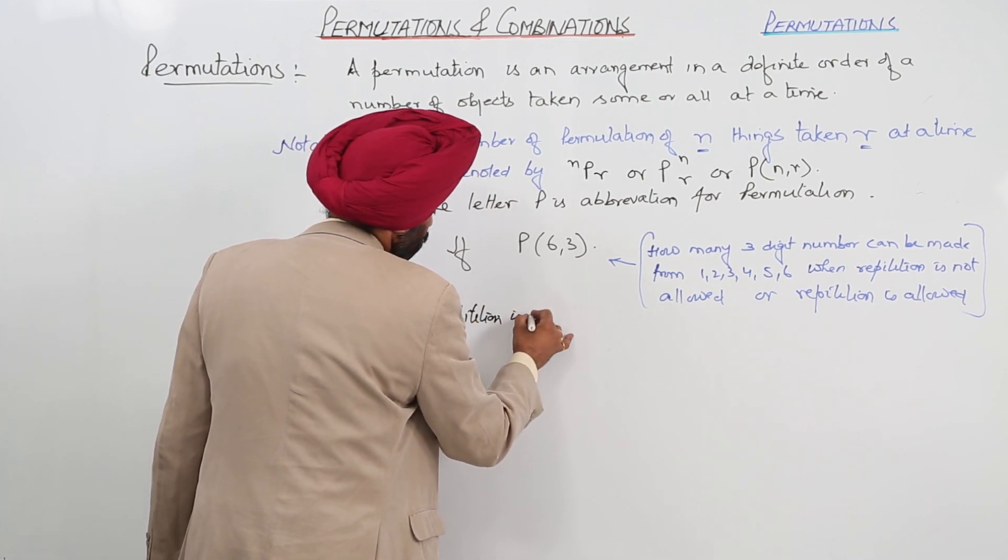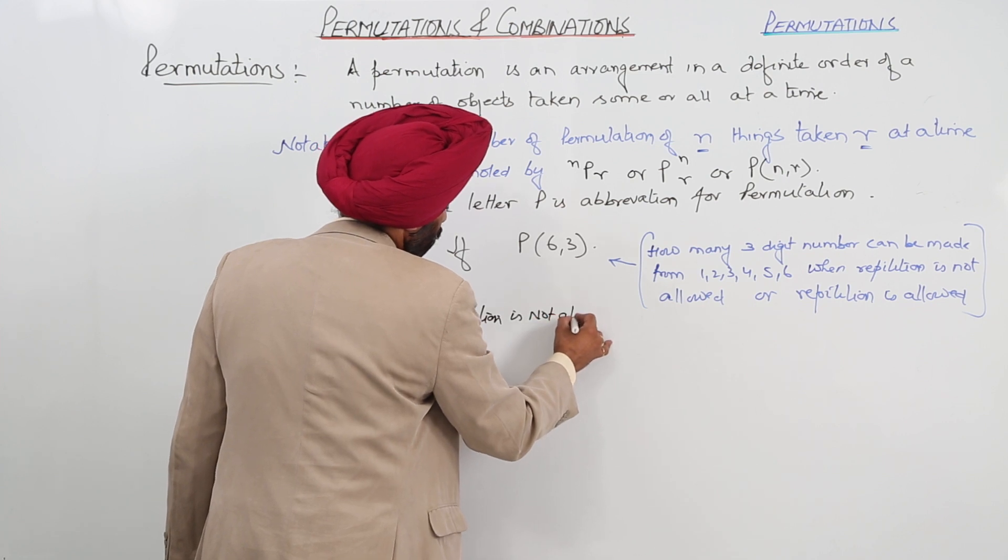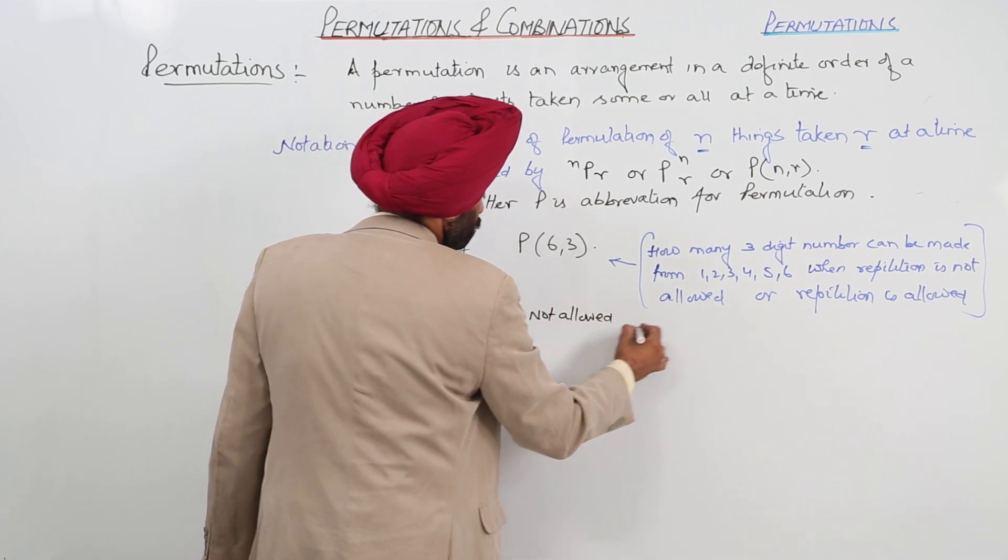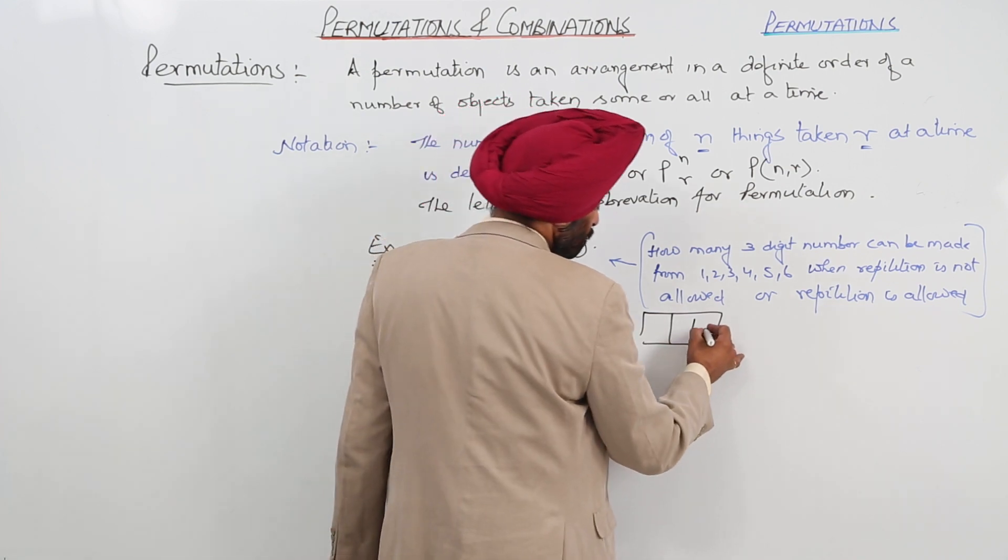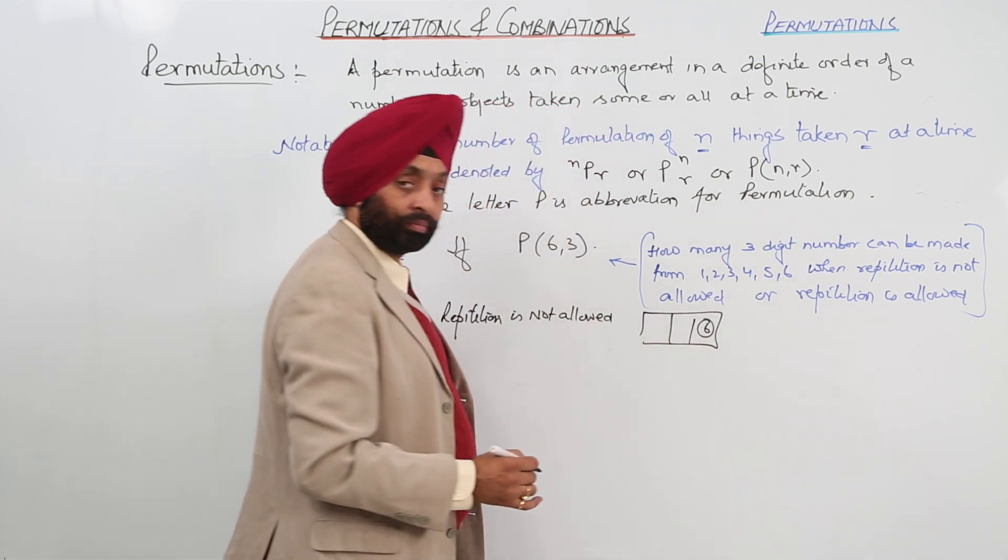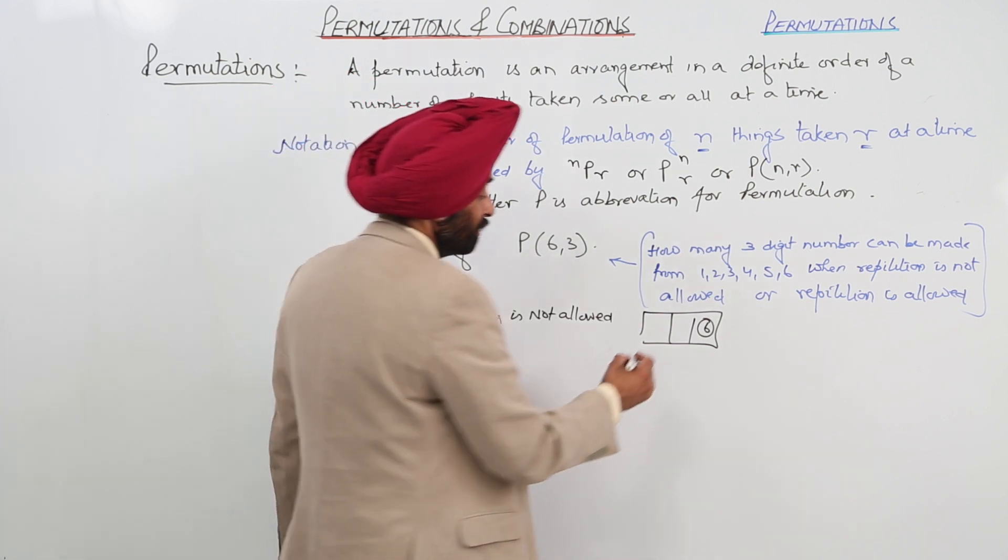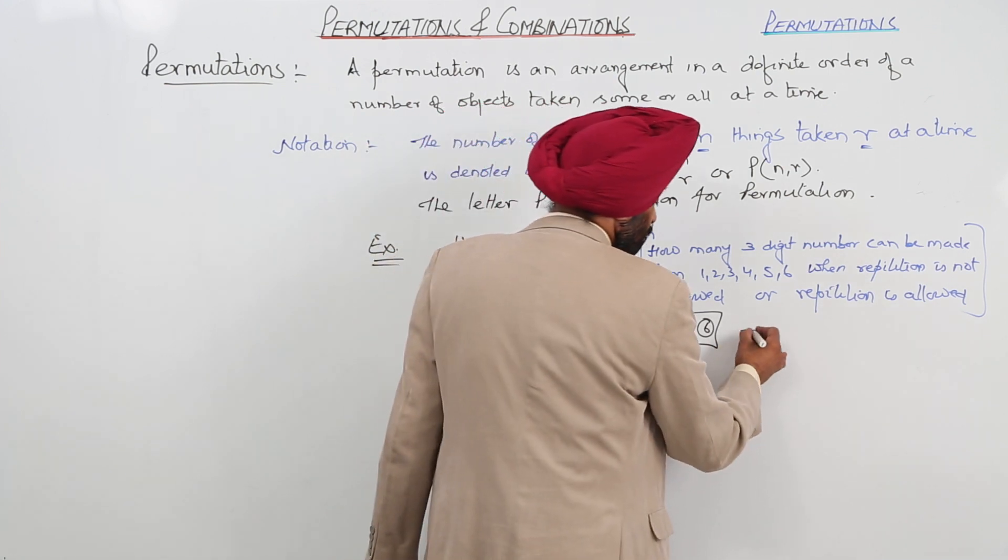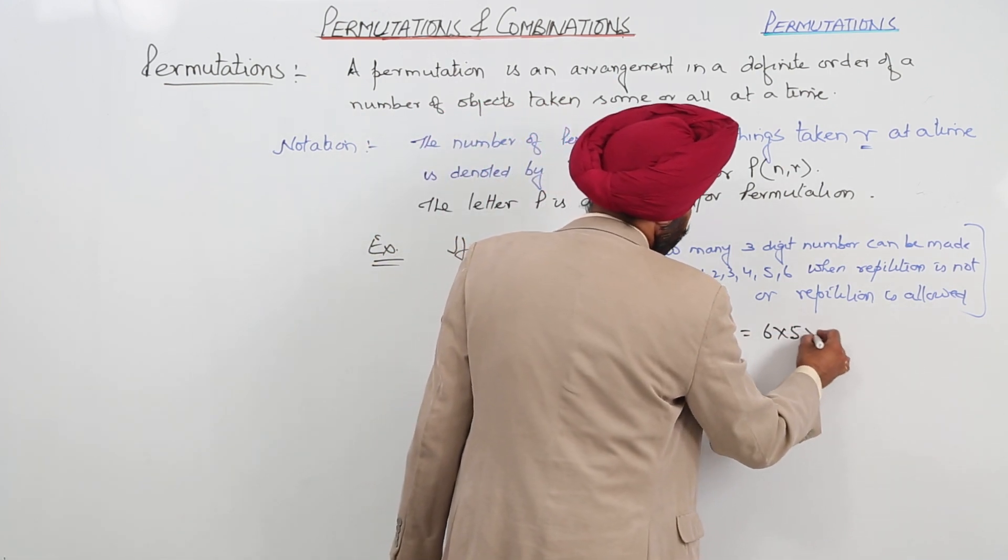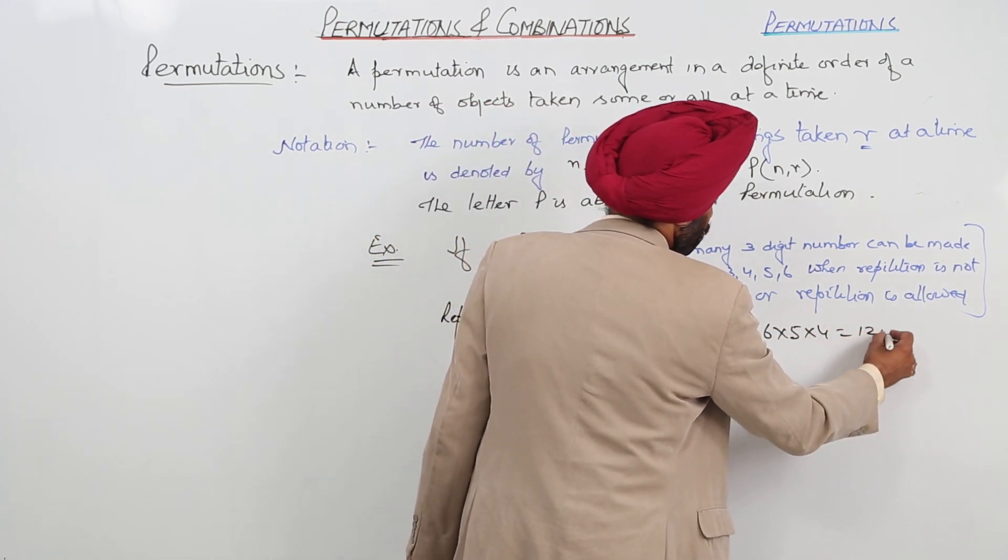Repetition is not allowed. So, what we are going to do here? All the 6 digits can come here. You have to take only 3, then 5, then 4. So what the result is? 6 times 5 times 4, that is 120.